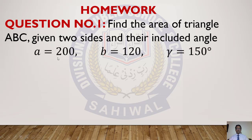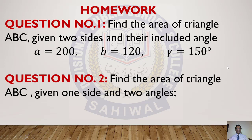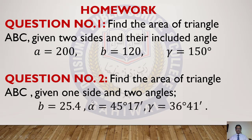Now I have given you two practice questions. In question 1, find the area of the triangle. Similarly in question 2, find the area of triangle ABC given one side and two angles: b = 25.4, α = 45°17', γ = 36°41'. Please attempt these questions. This is the end of the lecture. Thank you.